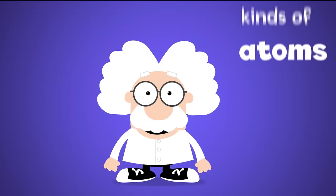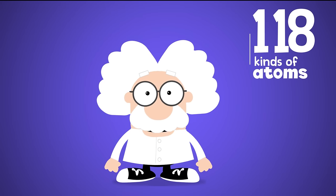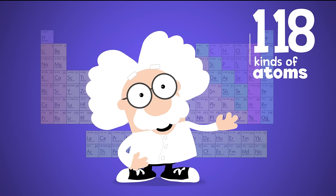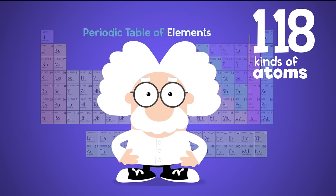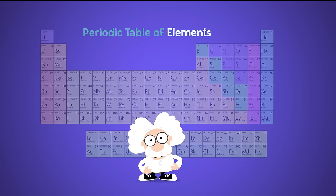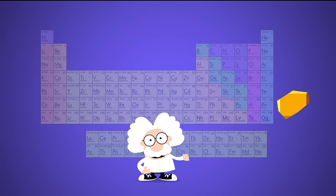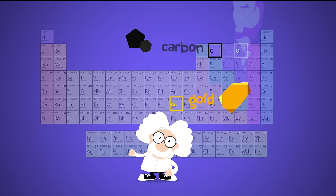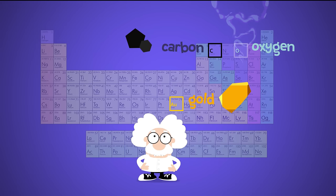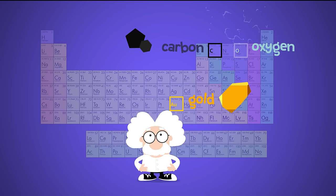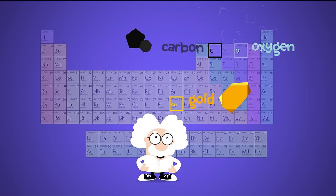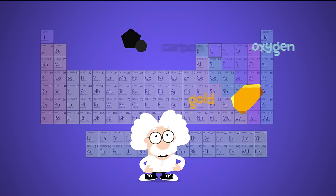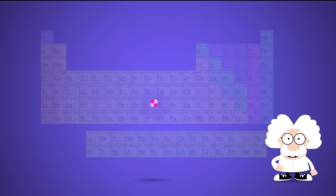There are a hundred and eighteen different kinds of atoms, which are each the smallest part of an element. If we observe elements like gold, carbon, and oxygen, we can see that they have very different properties that don't look or act the same. But why are they so different?